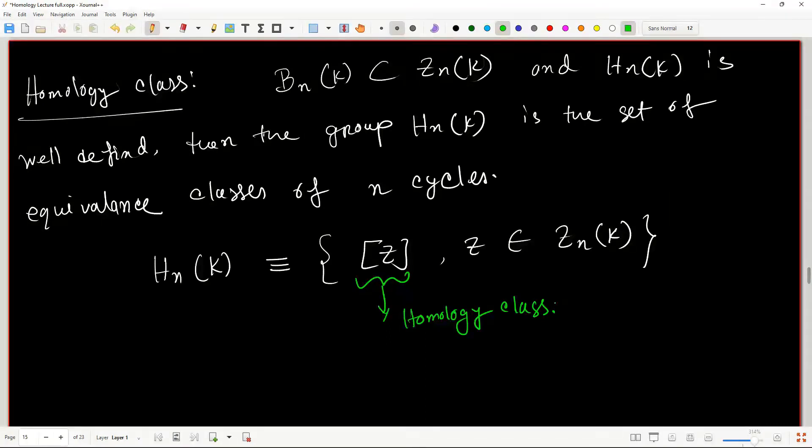Two N cycles, let's say Z and Z prime, are in the same equivalence class if and only if Z minus Z prime belongs to the BN of K. So these are two cycles.